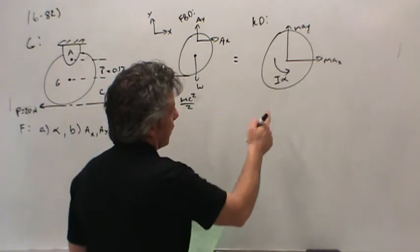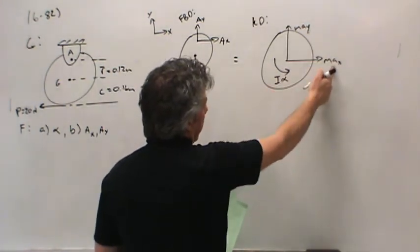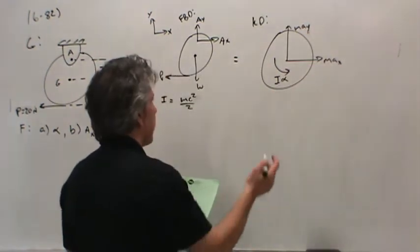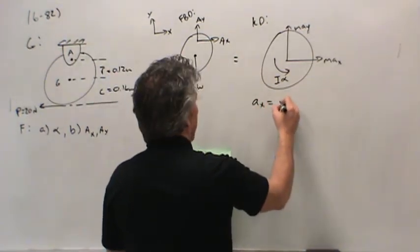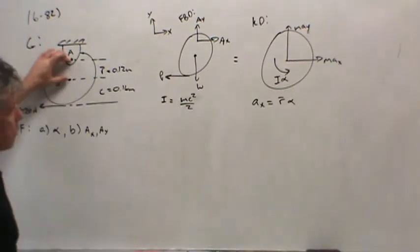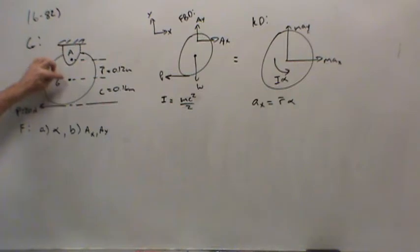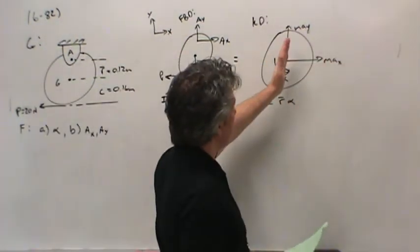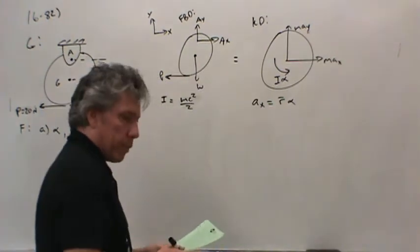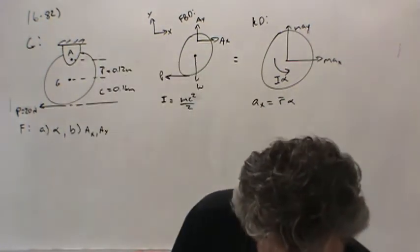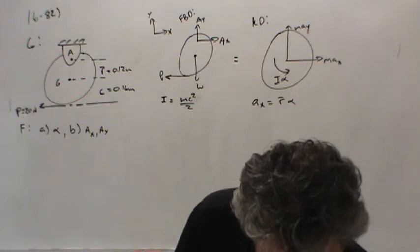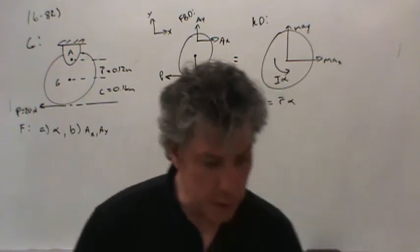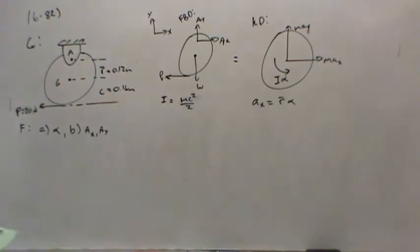Kinematically, there's a relationship between the angular acceleration alpha and Ax. Ax would be equal to r bar times alpha, which is the distance from the pivot point. The acceleration at this point is zero, so the relative acceleration is just the tangential acceleration. It's leaving from rest.